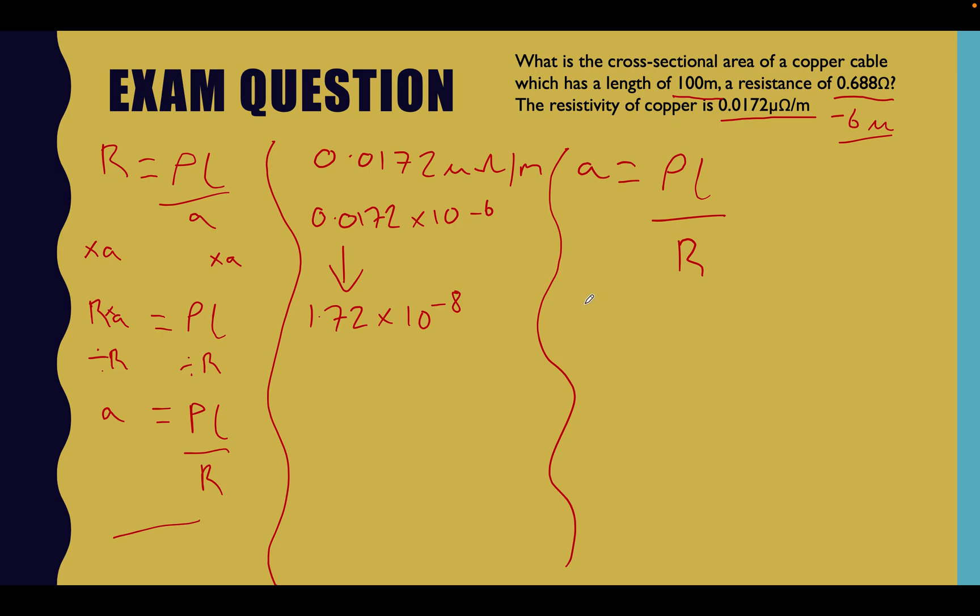Right, let's put some values in. So the cross-sectional area is going to be equal to 0.0172 times 10 to the minus 6 multiplied by the length, which in our case here is 100 meters. So that's multiplied by 100. And then we're going to divide all this by the resistance reading that we've got to deal with, which is 0.688 ohms.